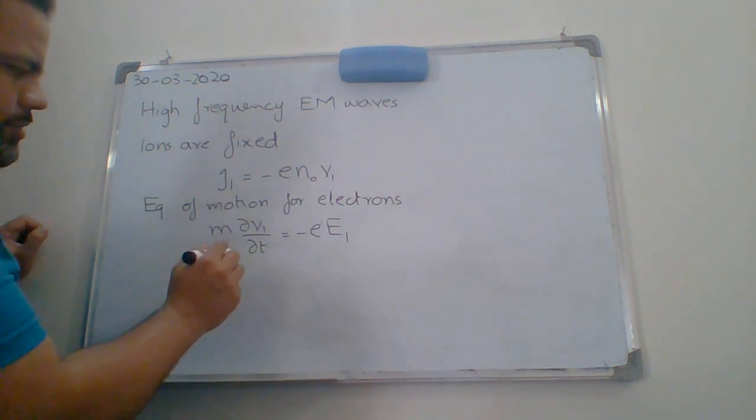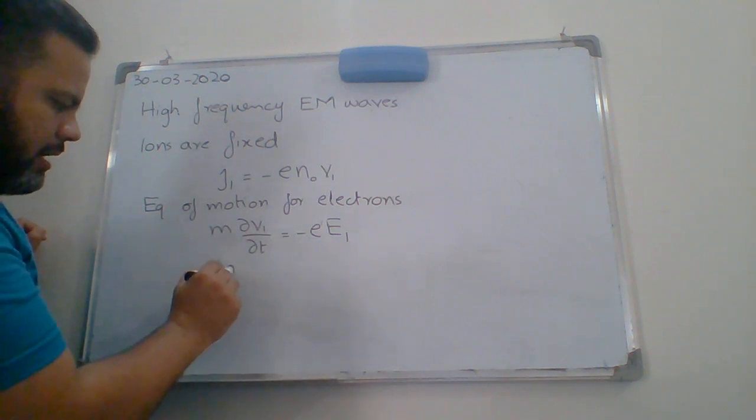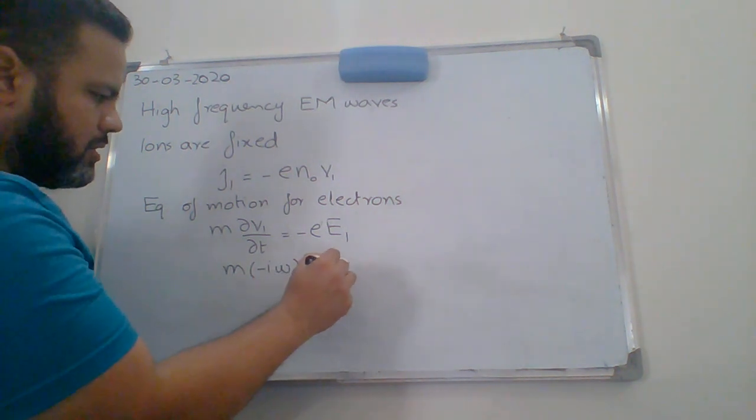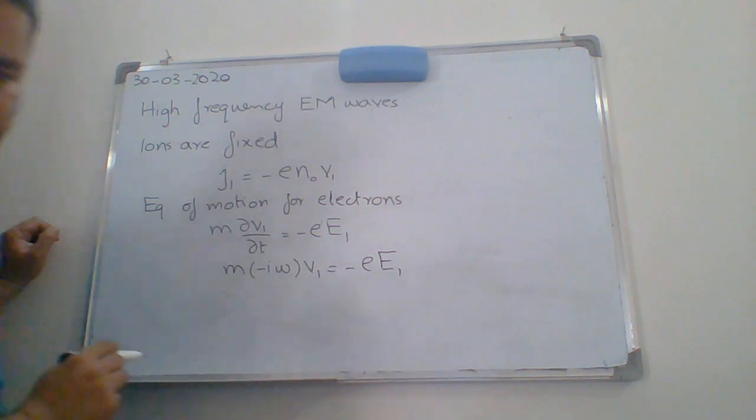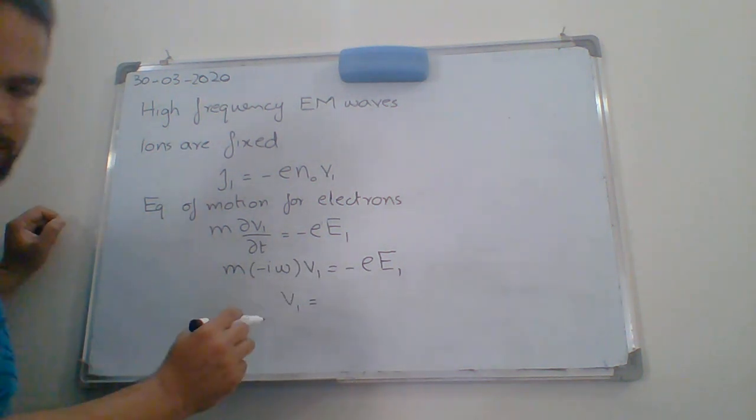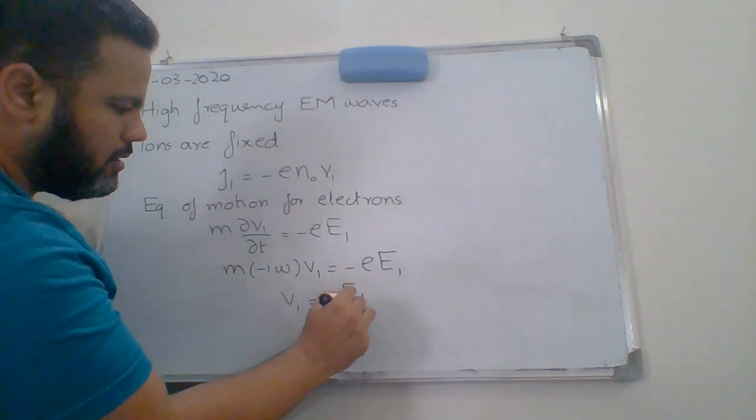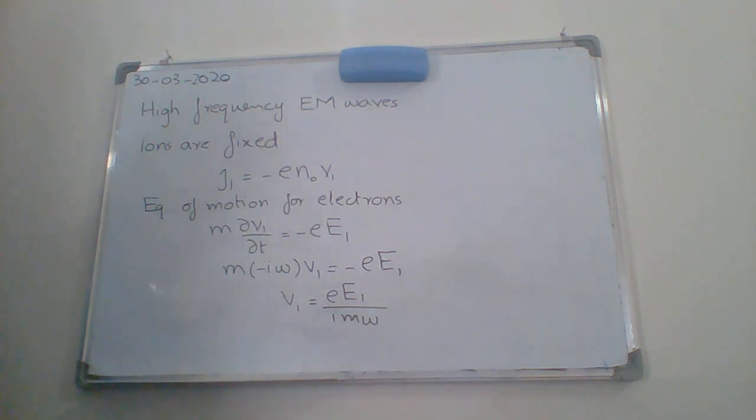By linearizing this equation, this is the linearized part, and then applying the partial derivative: M minus iota omega V1 equals minus E E1. So we have V1 as E E1 by iota M omega. This is my perturbed velocity.